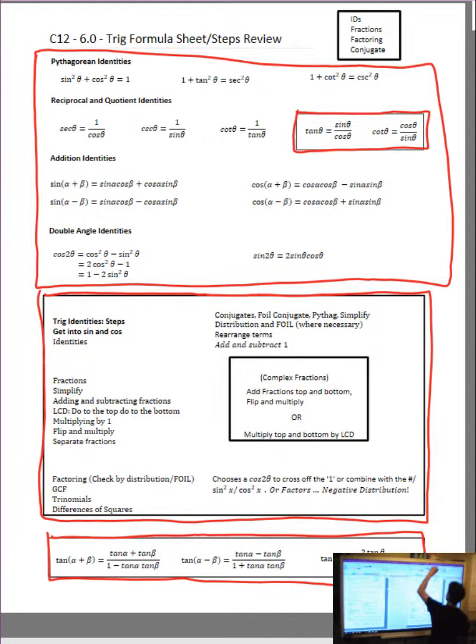Let's start at the top, the Pythagorean identities. Sine squared theta plus cosine squared theta is equal to one. We go use this one a lot all the time, just like 90% of the time, 99%, yeah whatever, a lot.